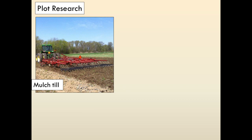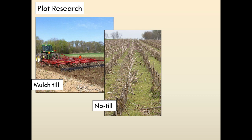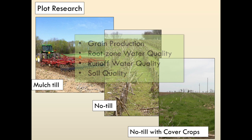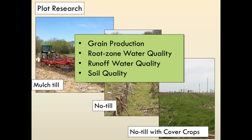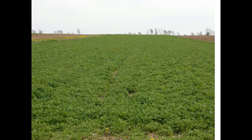These are large plots, almost an acre in size each — a replicated study that allows us to look at things on a fairly large basis using similar equipment to what a farmer would use. We have three cropping systems that have been fairly continuous over the 20-plus years on those plots: one that's a mulch-till corn-soybean cropping system, one that's a no-till corn-soybean cropping system, and one that has had no-till with cover crops. There are multiple aspects being measured: grain production, root zone water quality, surface runoff water quality, and soil quality measurements.